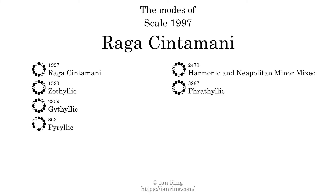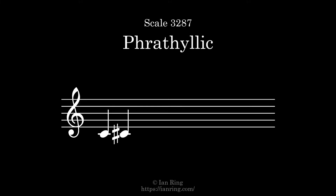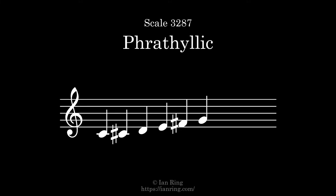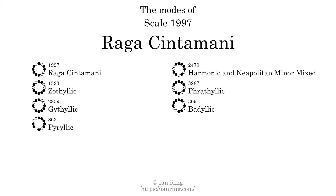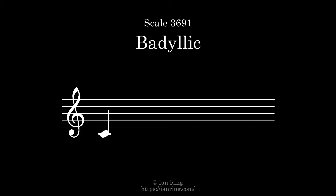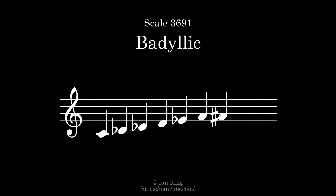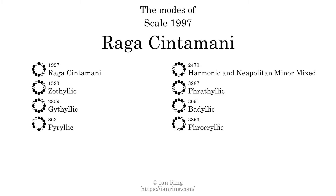The sixth mode is scale 3287, also known as geethilic. The seventh mode is scale 3691, also known as geethilic. The eighth mode is scale 3893, also known as geethilic.